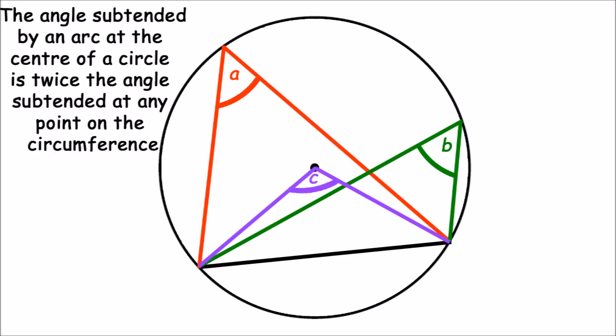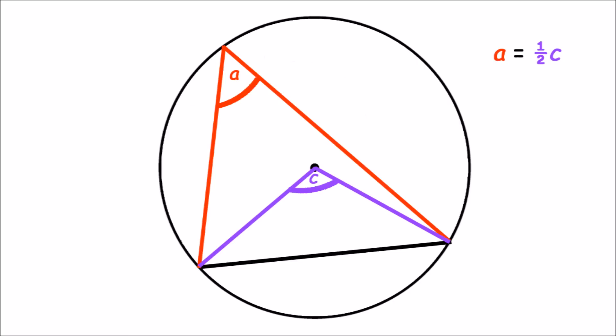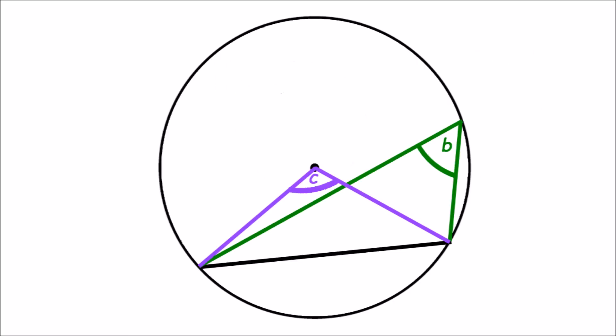Based on the Circle Theorem that states the angle subtended by an arc at the centre of a circle is twice the angle subtended at any point on the circumference, angle C must be half the size of angle A. But angle C must also be half the size of angle B. The only way both statements can be true is if angle A and B are equal.